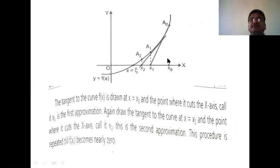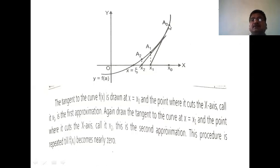The geometrical meaning: we take x₀ as any point. Suppose y = f(x) is the curve of the equation. We take the point (x₀, f(x₀)) on this curve and draw the tangent to the curve at that point. Where the tangent cuts the x-axis is the point x₁. So geometrically, x₁ is the point where the tangent drawn at x₀ meets the x-axis.